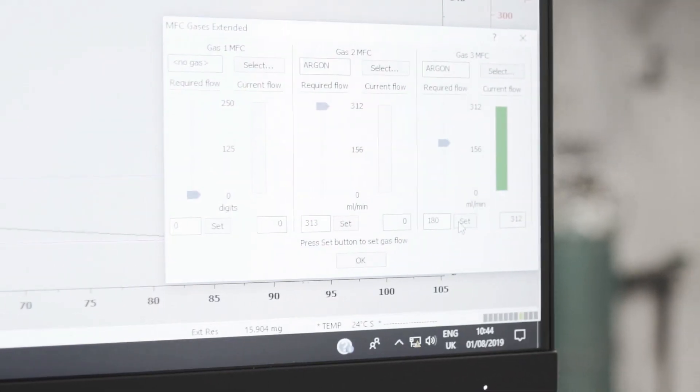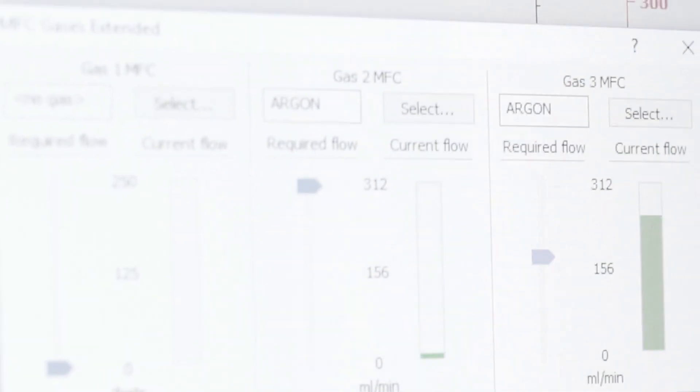So what we have here is a NETCH skimmer. It is a thermal analysis unit. It does thermogravimetric analysis and differential scanning calorimetry.